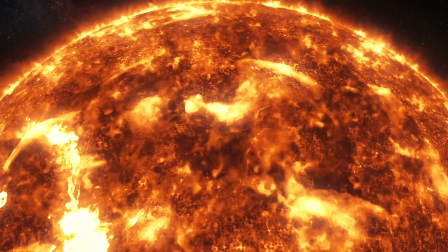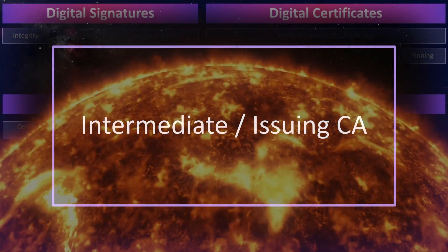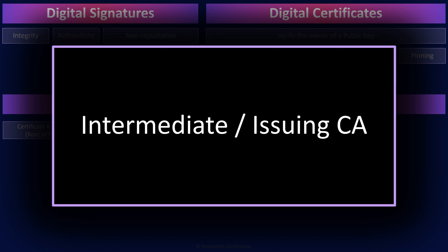And if the CA's private key was ever compromised, the whole entire system goes up in flames — no one can trust anyone. It would be extremely bad: you can't trust any digital certificate the CA has ever issued, and therefore you can't trust a whole lot of entities on the internet. To avoid this major risk, the private key is kept in a system that is offline, air-gapped, not connected to the internet, in a giant vault, within another vault, surrounded by security measures, in an undisclosed location.